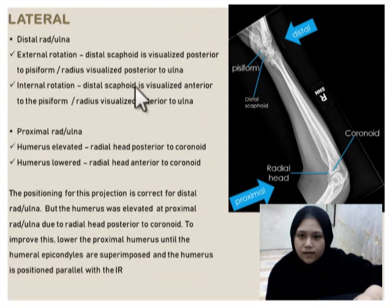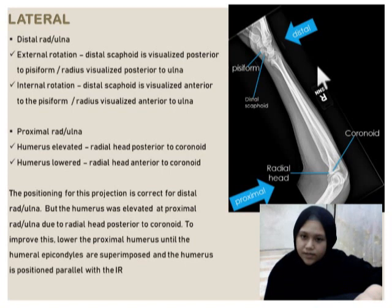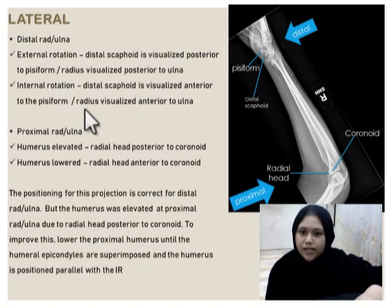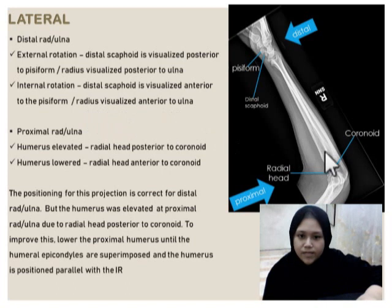For distal rotation of lateral — distal radius ulna: for external rotation, distal scaphoid is visualized posterior to pisiform. The other criteria is radius visualized posterior to ulna. For internal rotation, distal scaphoid is visualized anterior to the pisiform, and radius visualized anterior to ulna. For proximal, if the humerus is elevated, radial head is posterior to coronoid.